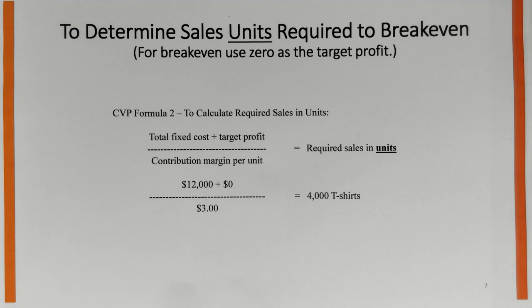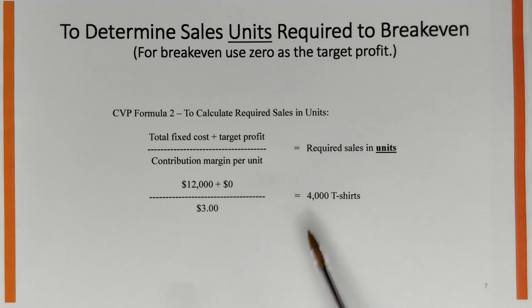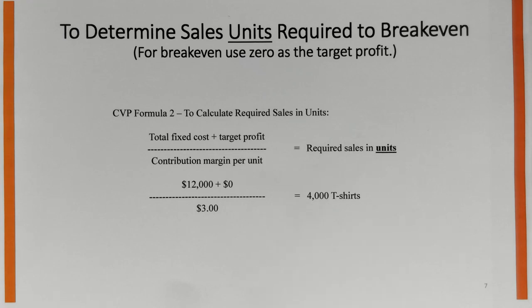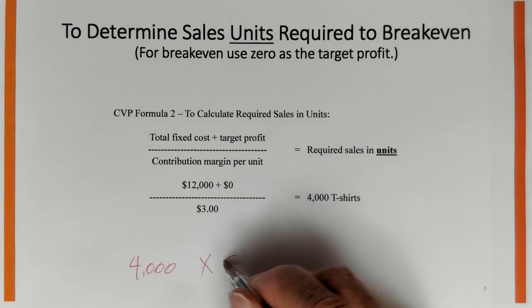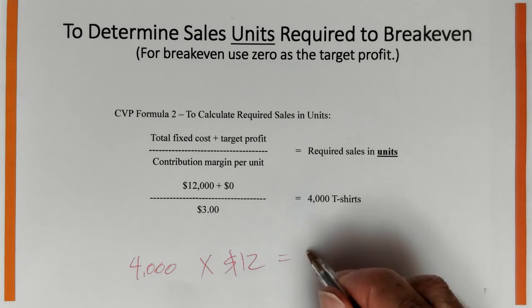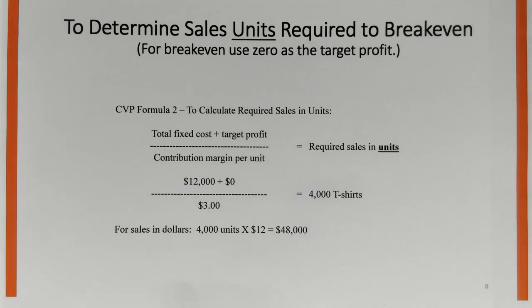Using Formula 2 directly for units: $12,000 in fixed cost plus target profit of zero, divided by the unit contribution margin of $3, gives 4,000 t-shirts. With this formula we can also determine sales in dollars — 4,000 units times the $12 selling price = $48,000. Both formulas confirm the same answer.